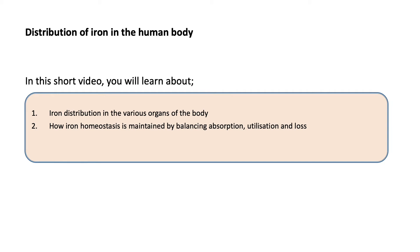Hi, welcome to our series of short snippets on haematology for medical undergraduates. This short video will describe how iron is distributed among the various parts of the human body and how homeostasis is achieved through balancing of iron absorption, utilization, and loss.